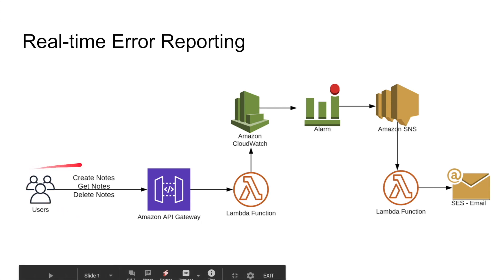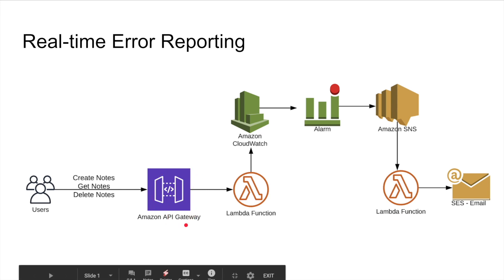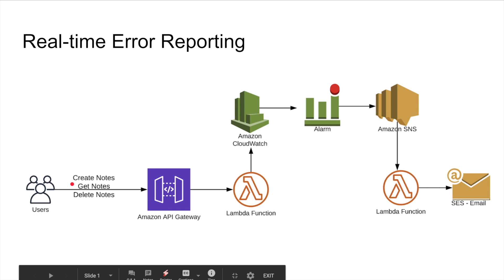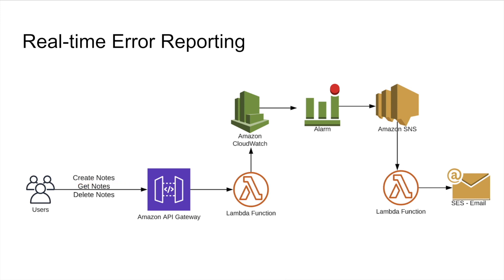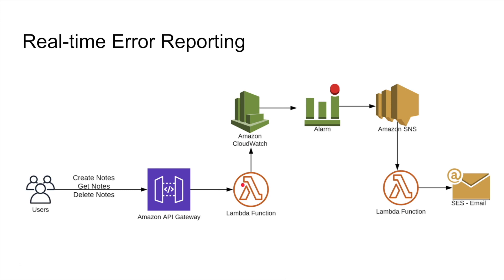Let's start with the architecture diagram. This part is our classic serverless architecture — imagine this is a Notes application API. We have a REST API hosted in Amazon API Gateway with RESTful endpoints to create notes, get notes, and delete notes. When a user wants to create a note, they use the POST endpoint, sending the node ID and the note text in the request body. The corresponding Lambda function is then triggered to execute the create-note business logic.